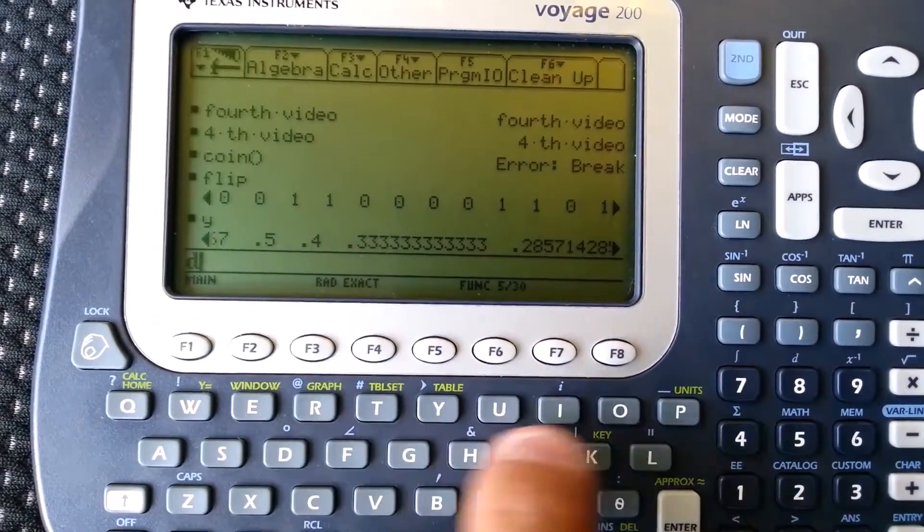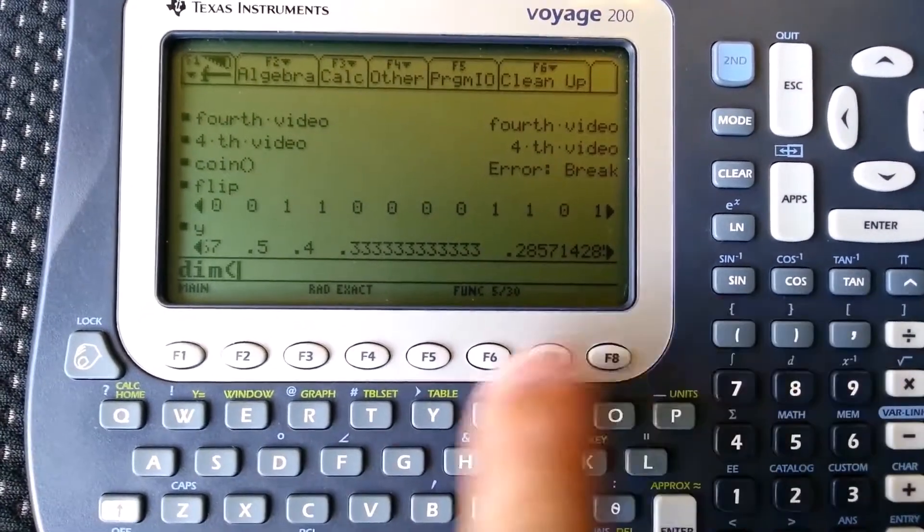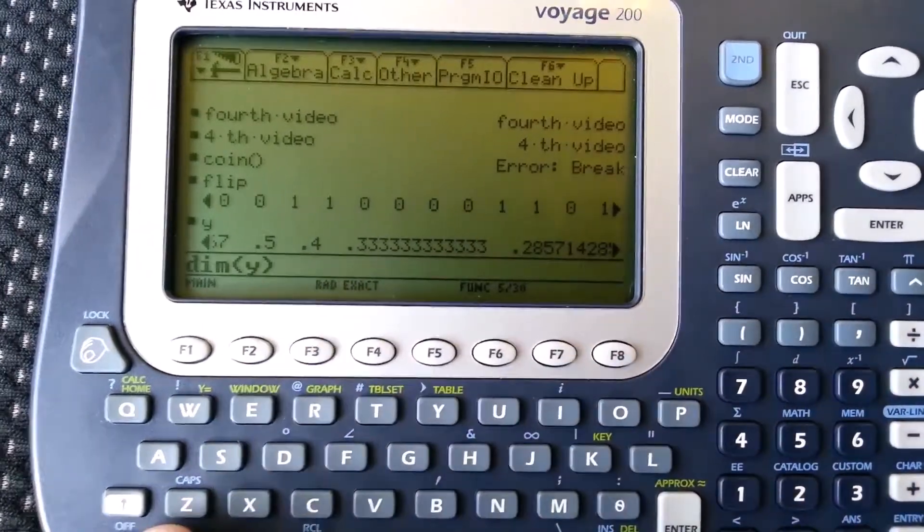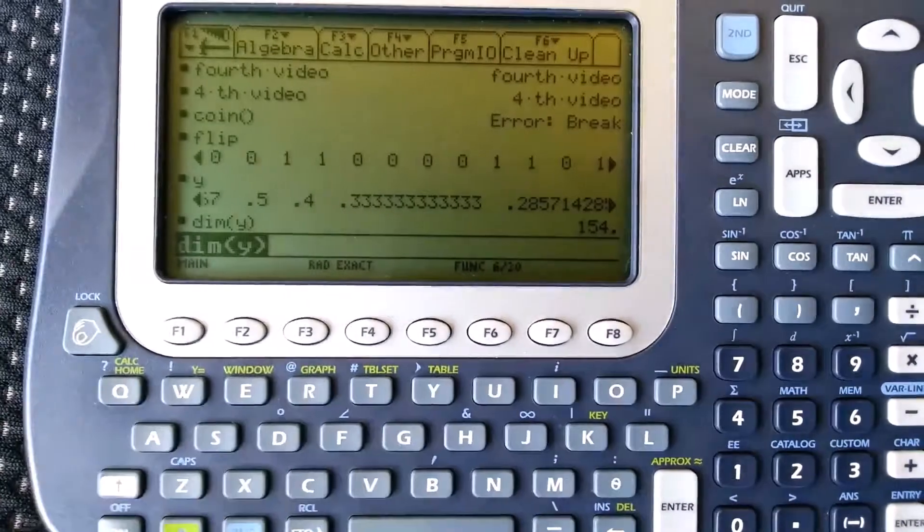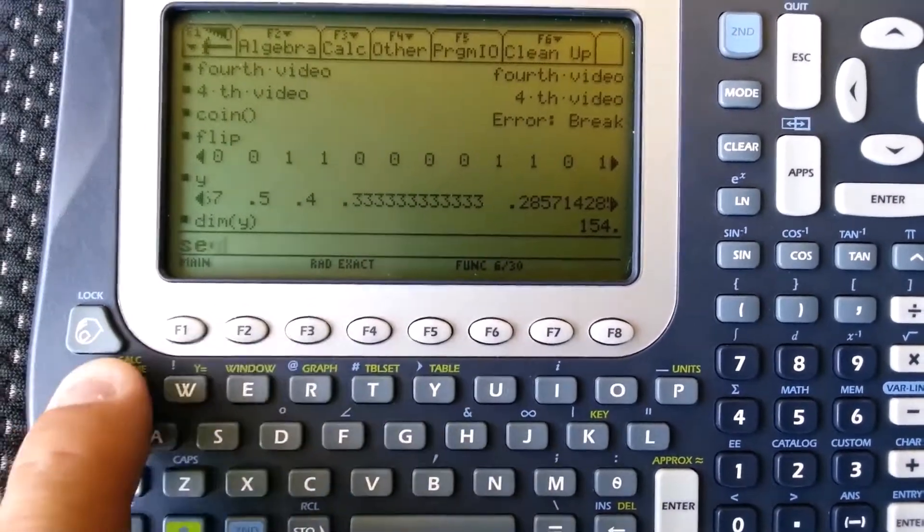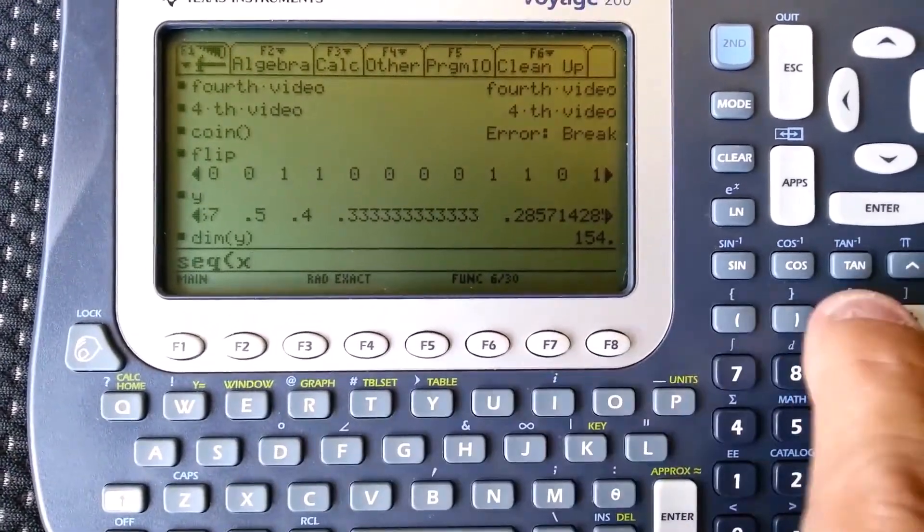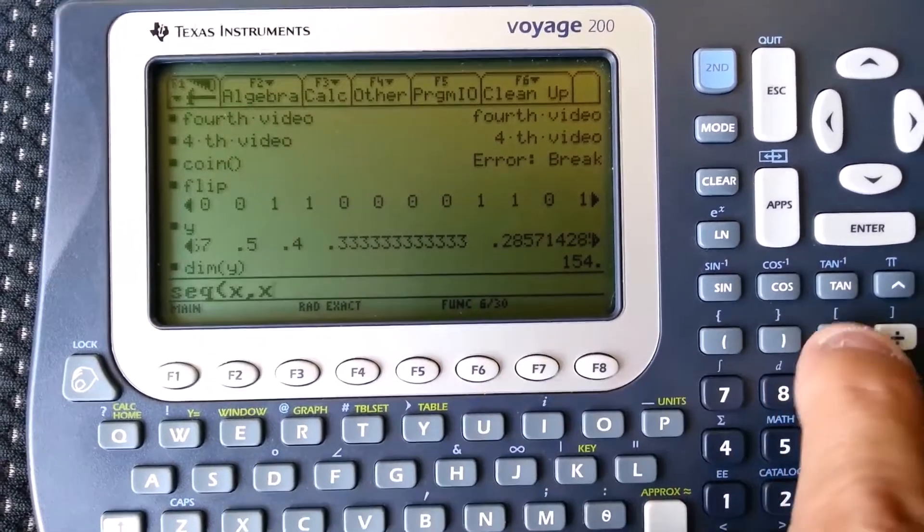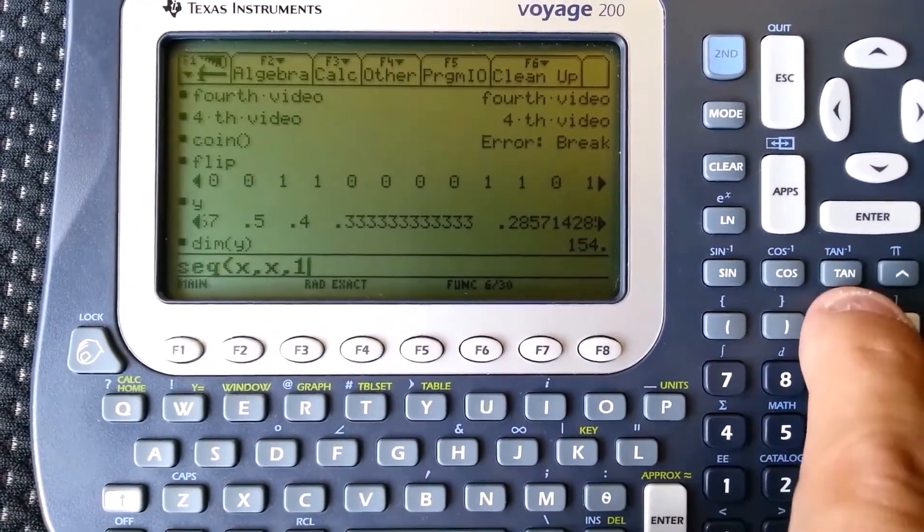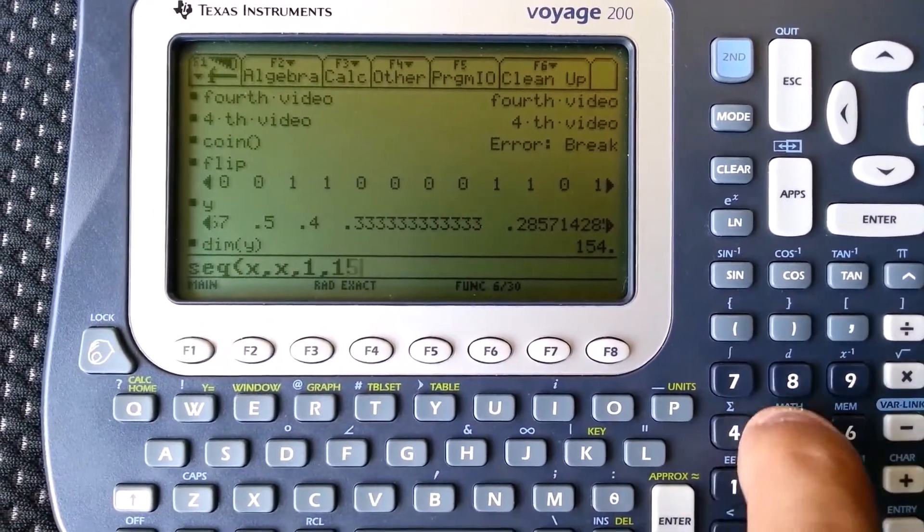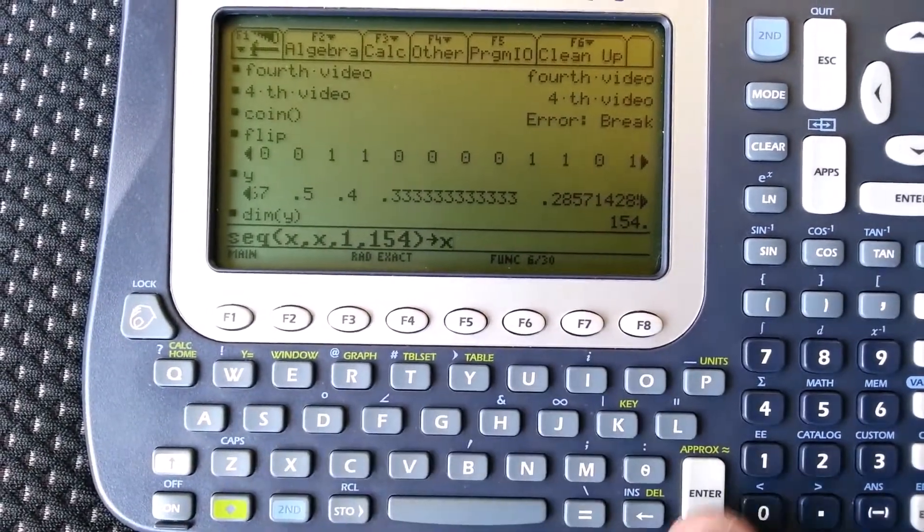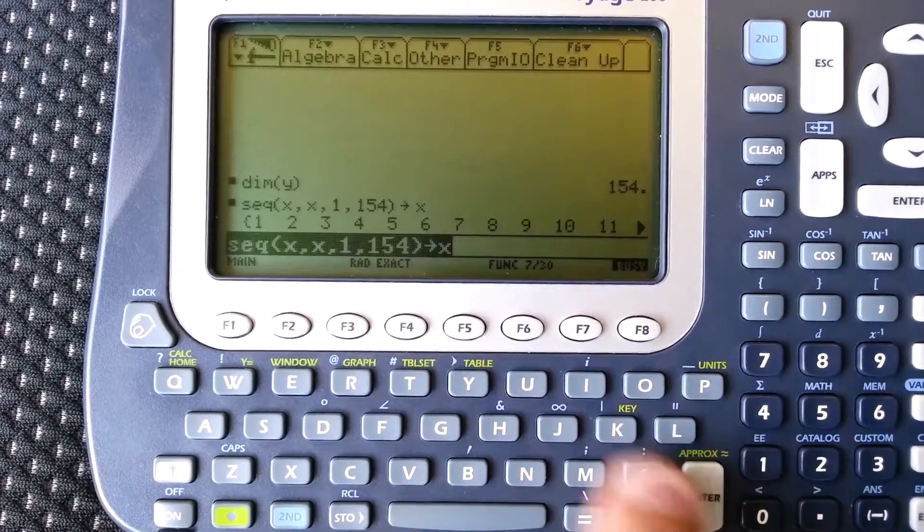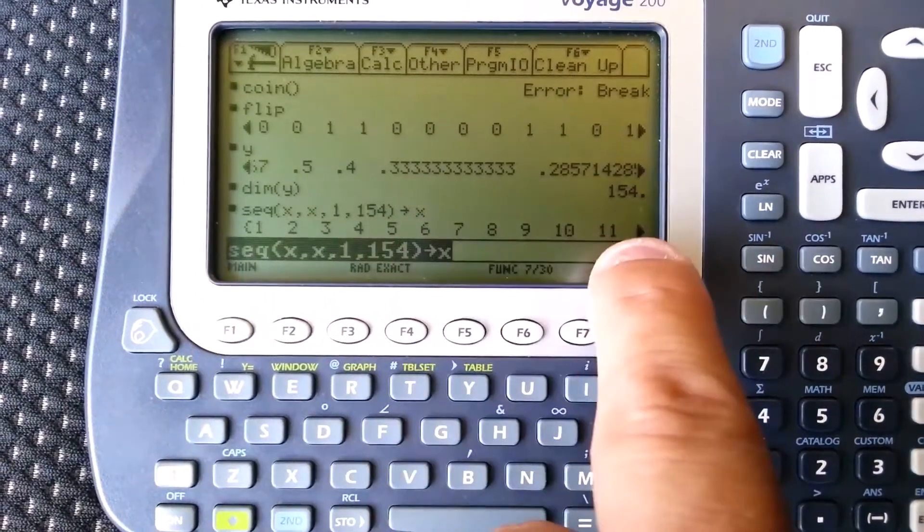I'm going to do something. Let me see how many observations are in this list. So DIM is a dimension. I'm going to create a sequence from 1 to 154, and I'm going to store that to a variable called X. So X is just the numbers 1 to 154.